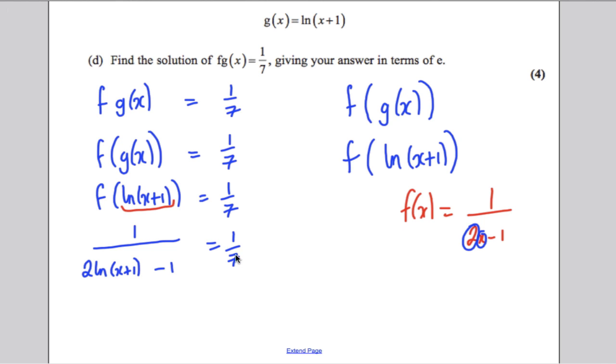And then, if 1 over this equals 1 over 7, then we can flip them both and say that 2ln(x+1) subtract 1 must equal 7. Add 1 to both sides, 2ln(x+1) equals 8. Divide both sides by 2, ln(x+1) equals 4. Take exponentials of both sides, x+1 must be e⁴, and then subtract 1 from both sides, x is e⁴ subtract 1, you have found your answer nice and easily. And that's it.